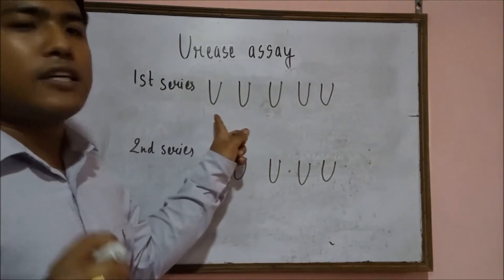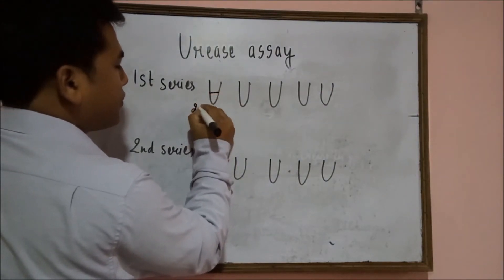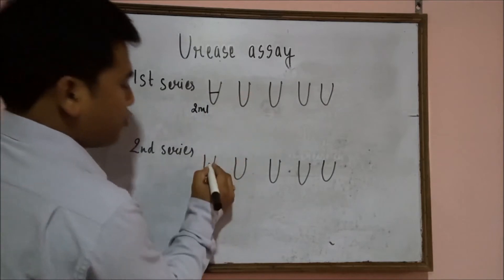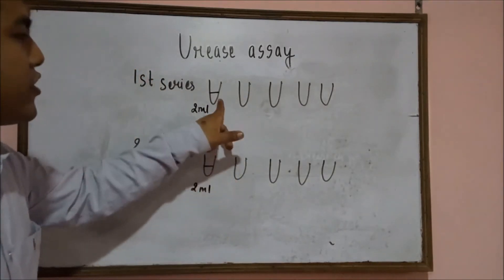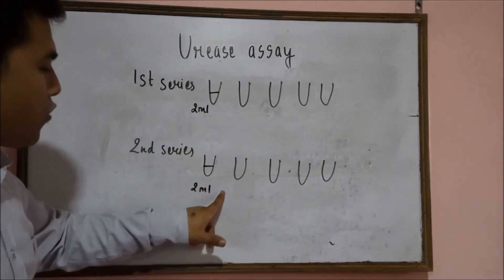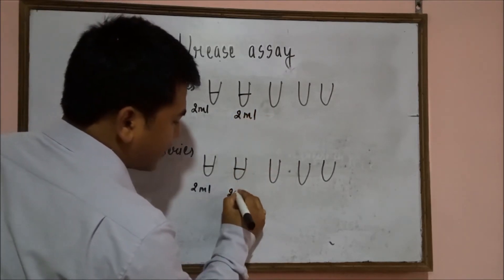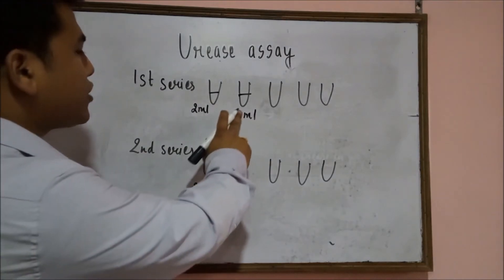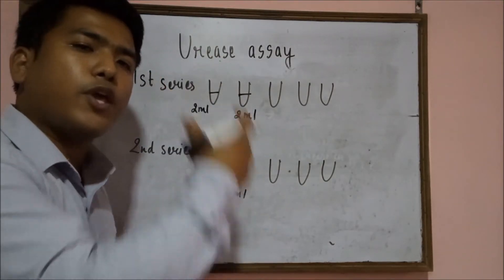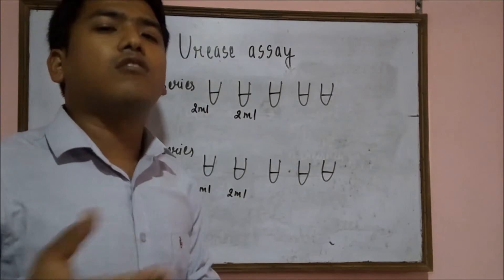The concentrations must be in increasing order. You add 2 ml of the calibrator into each tube. The concentration must be the same in the first test tube of the first series and the first test tube of the second series. Similarly, you add 2 ml of the calibrator in the second series, and the concentrations of corresponding test tubes across both series should be equal. Note that the volume of 2 ml is just an example; you can take the volume of calibrator according to your need.